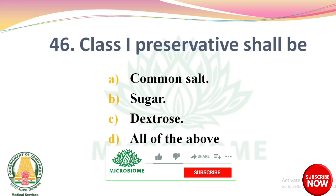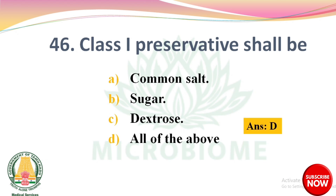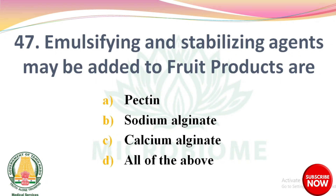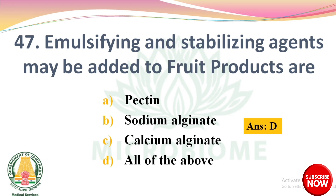Question 44: Class 1 preservatives shall be — options: common salt, sugar, dextrose, all of the above. The right answer: option D, all of the above — common salt, sugar and dextrose which come under class 1 preservatives. Question 45: Emulsifying and stabilizing agents that may be added to fruit products are — options: pectin, sodium alginate, calcium alginate, all of the above. The right answer: option D, all of the above — pectin, sodium alginate and calcium alginate are used as emulsifying and stabilizing agents.